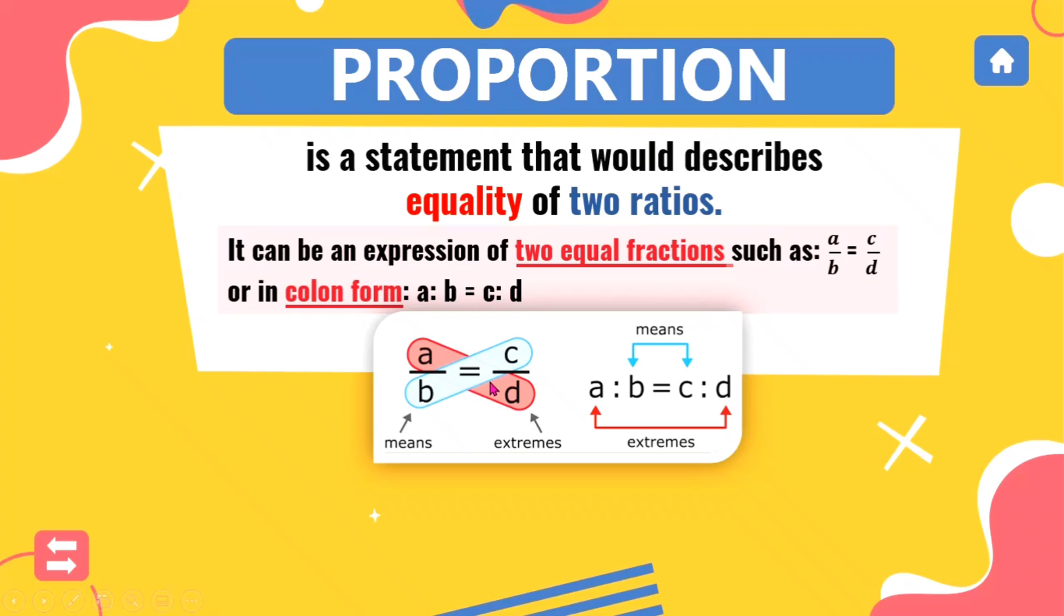And remember, pinag-aralan na ninyo ito nung kayo ay grade 5. Meron tayong tinatawag na means and extremes sa proportion. Sa fractional form, yung A and D ang tinatawag nating extremes. While B and C yung means. Sa colon form, ayan, yung dalawang nasa dulo, yun ang extremes. And yung dalawang magkatabi, pagitan lang nila ay yung equal sign. Yun ang tinatawag nating means.